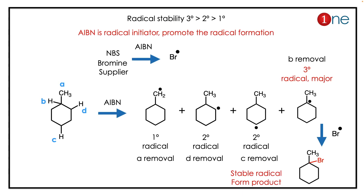You should know that AIBN is a radical initiator — it is the compound which promotes radical reactions. The radical initiator initiates a radical from the NBS, which is a bromine compound. It supplies a bromine radical, so radical formation is the key factor here.